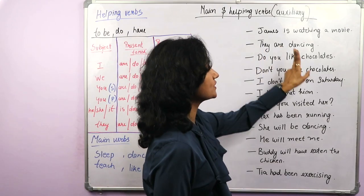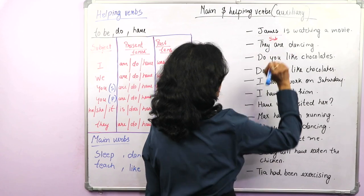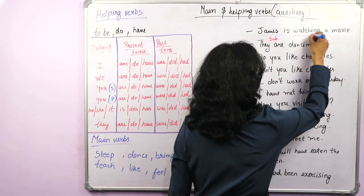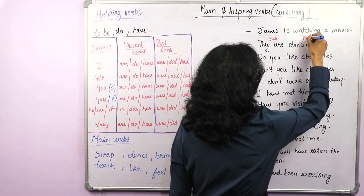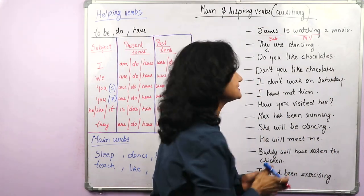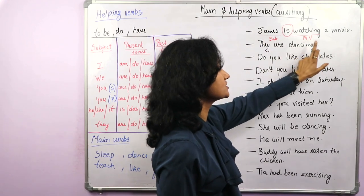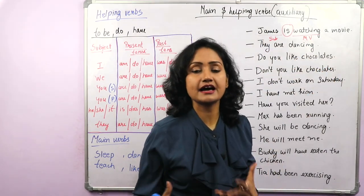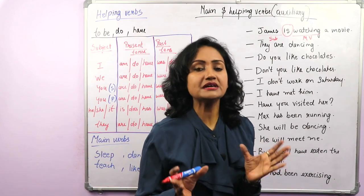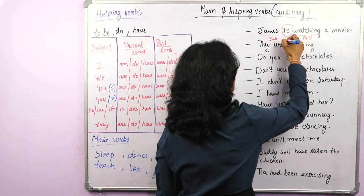First: 'James is watching a movie.' James is the subject. The main verb is watch — that is the action happening in the sentence. The helping verb is 'is.' Because if I make a sentence without the helping verb — 'James watching a movie' — that is grammatically incorrect and doesn't have meaning. So sometimes a main verb needs a helping verb to complete the sentence.